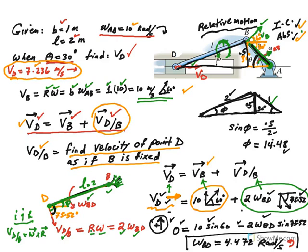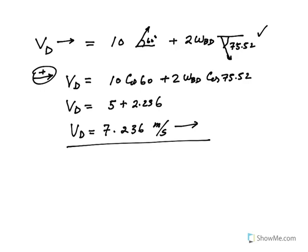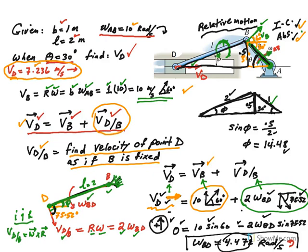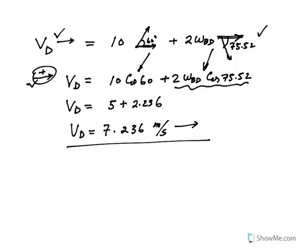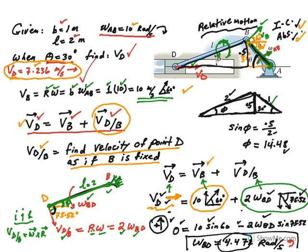Moving to the next step: I rewrote the equation. Equating horizontal components, velocity of D is what we are looking for. The horizontal component of velocity of B is 10·cos(60°), and the horizontal component of velocity of D relative to B is positive 2·omega_BD·cos(75.52°). Plugging in omega BD = 4.472 radians per second and solving gives the velocity of D.